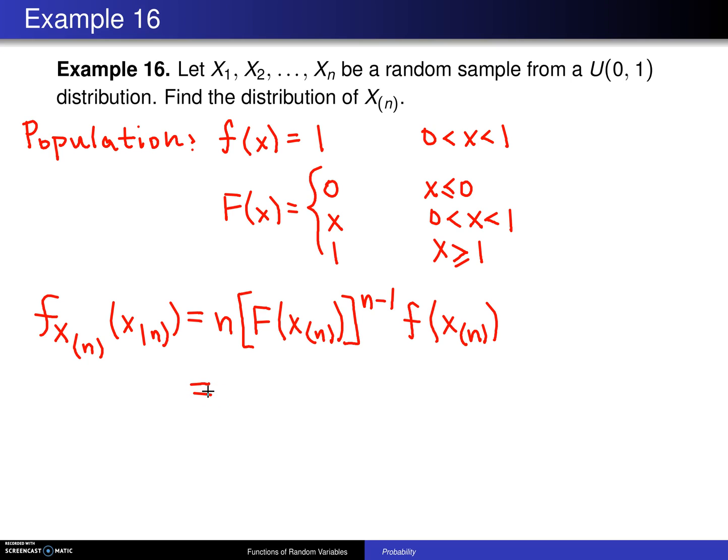Putting these pieces together for this particular distribution, here is the n, this right here is the CDF evaluated at x sub n, so that is just going to be x sub n raised to the nth power, times the probability density function evaluated at x sub n, that's 1, so that's easy, and you're done.